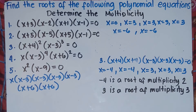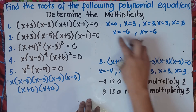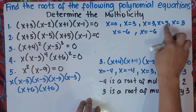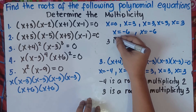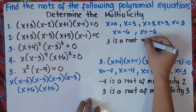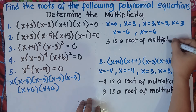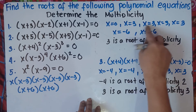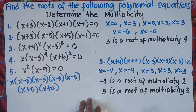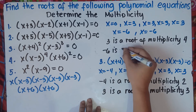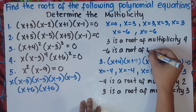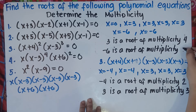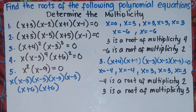For multiplicity in number 4: 0 is not repeating, so no multiplicity for 0. For 3: counting 1, 2, 3, 4 — so 3 is a root of multiplicity 4. For negative 6: it appears twice, so negative 6 is a root of multiplicity 2.